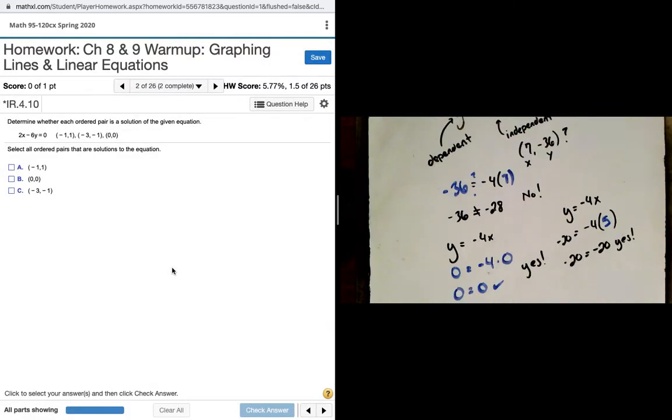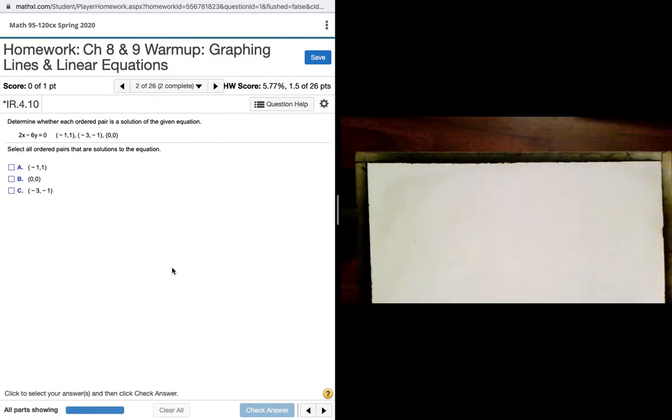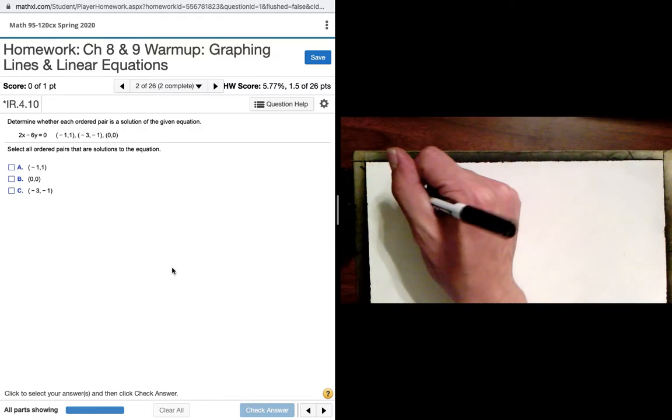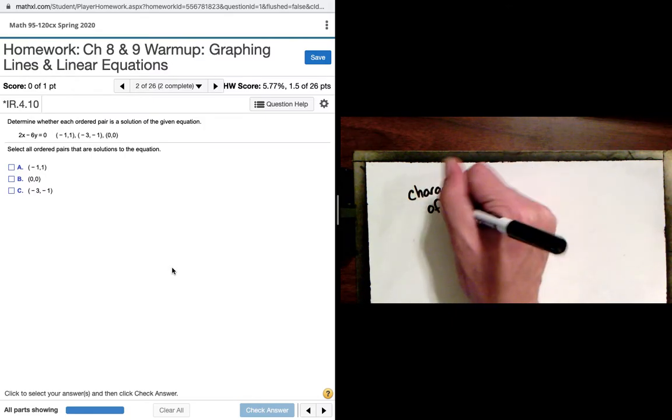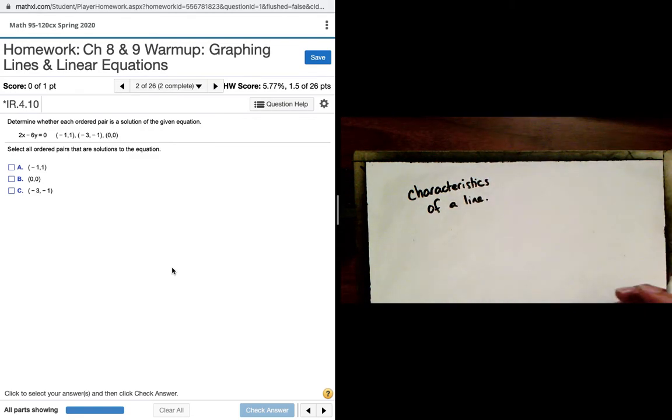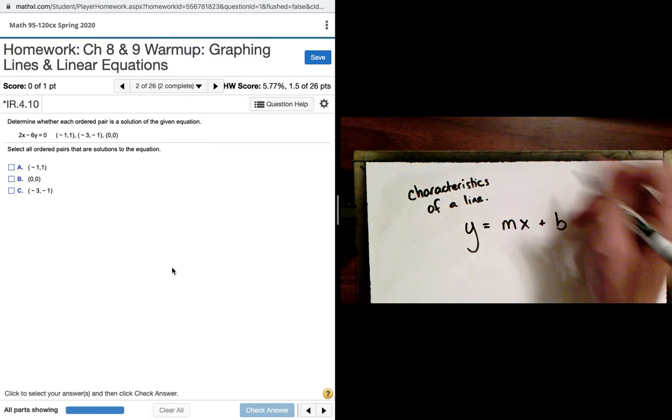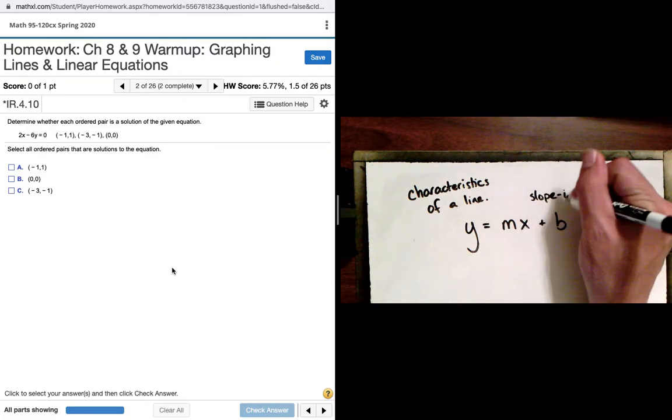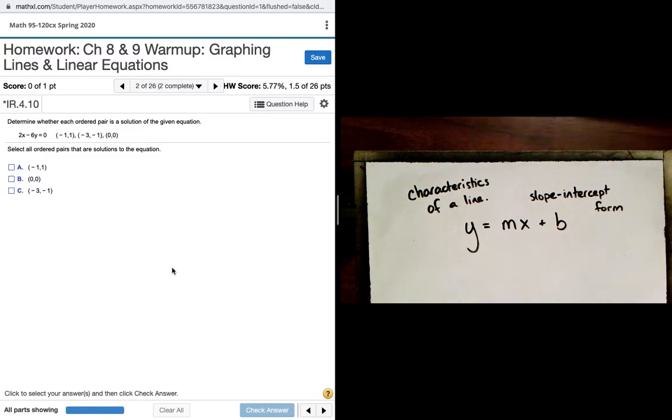In this case, not all - sorry, the first one did not, but the second two did. Now we want to talk more in detail about some characteristics of a line. First, let's start with giving ourselves a nice way of representing all lines. So we're going to use the form y is equal to mx plus b. It's referred to as slope intercept form.